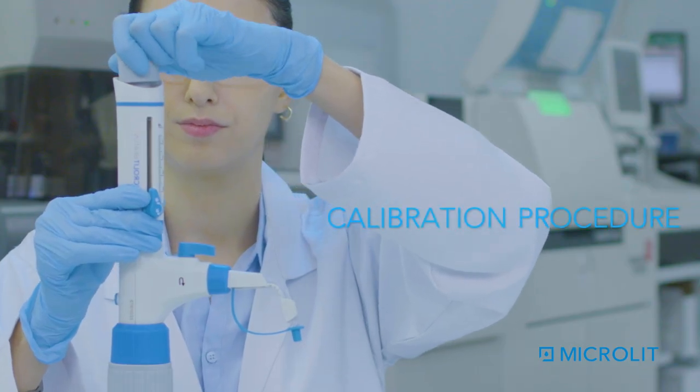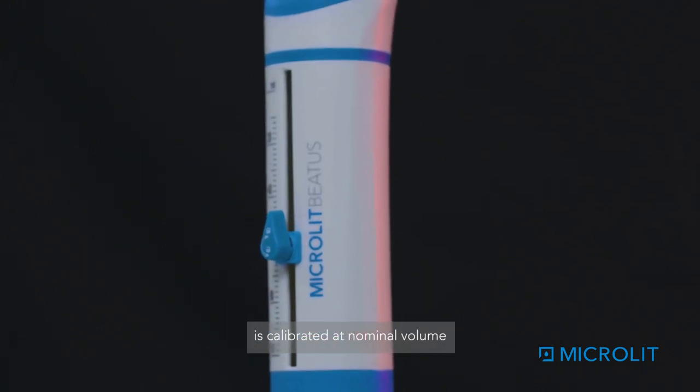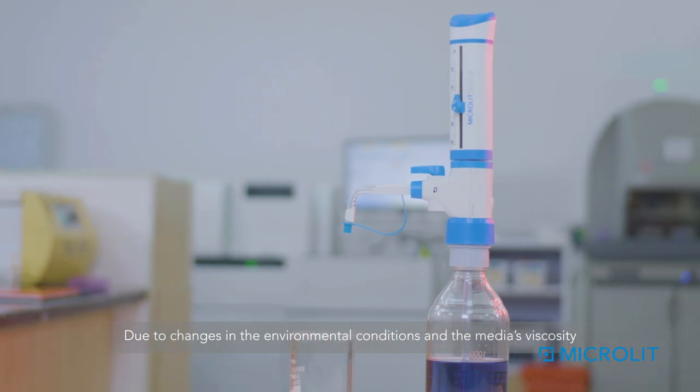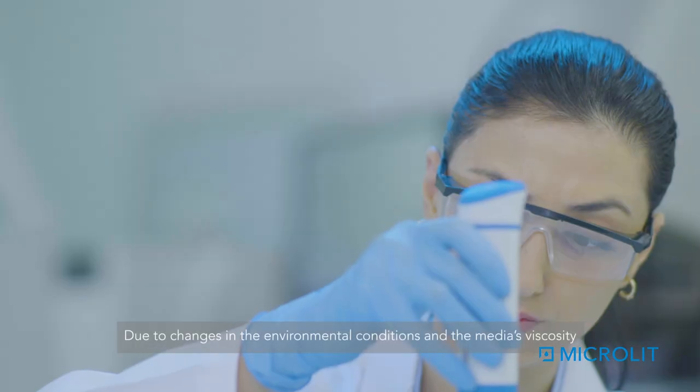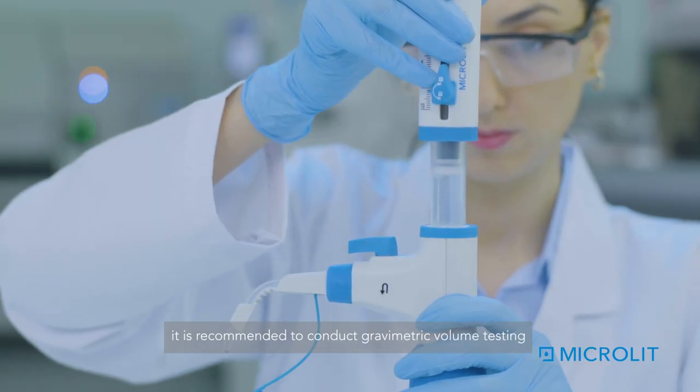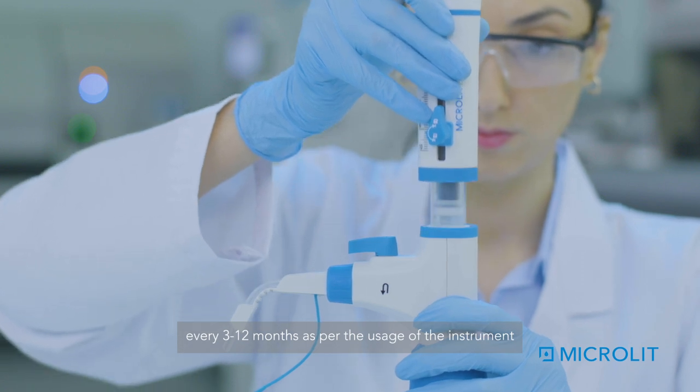Calibration Procedure. Microlit's Betis Bottle Top Dispenser is calibrated at nominal volume. Due to changes in the environmental conditions and the media's viscosity, it is recommended to conduct gravimetric volume testing every 3 to 12 months as per the usage of the instrument.